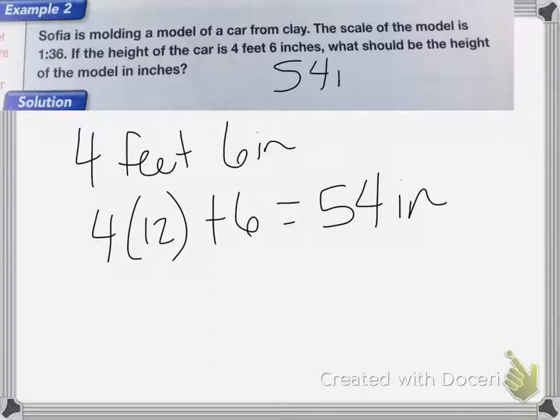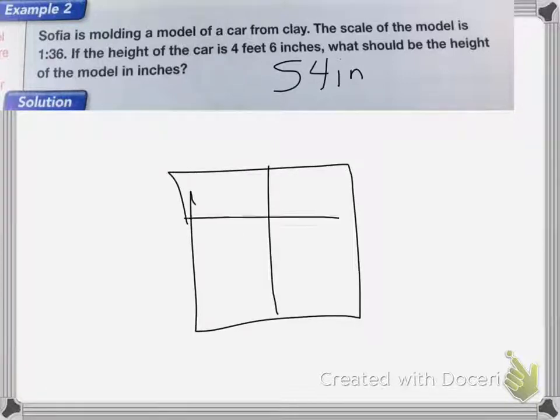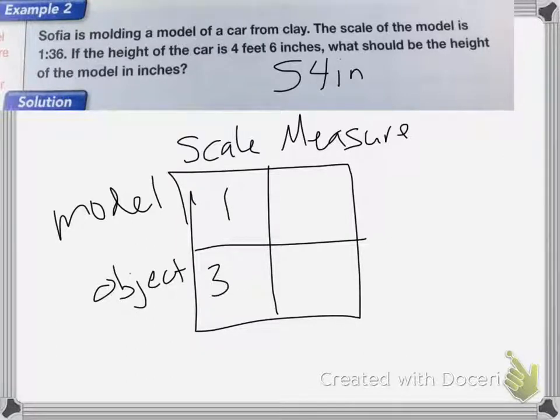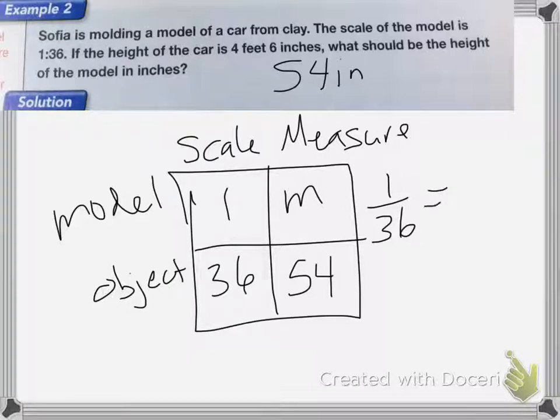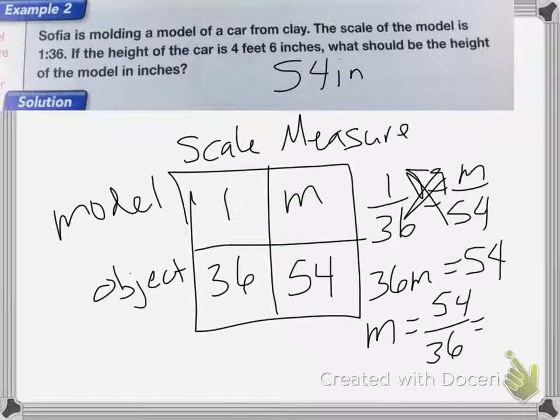Now we're going to create a ratio box, so I can figure out how tall my model should be. So we have the scale in the first, and then the measure, and then my model and the actual object. So the scale is 1 to 36, and then I don't know how big my model is, but the object, which is the car, is 54 inches tall. So change that into proportion. 1 over 36 equals M over 54. We do our cross products. I get 36 M equals 54, so M equals 54 over 36, which when we reduce, it ends up being 1 and 1 half inches tall.